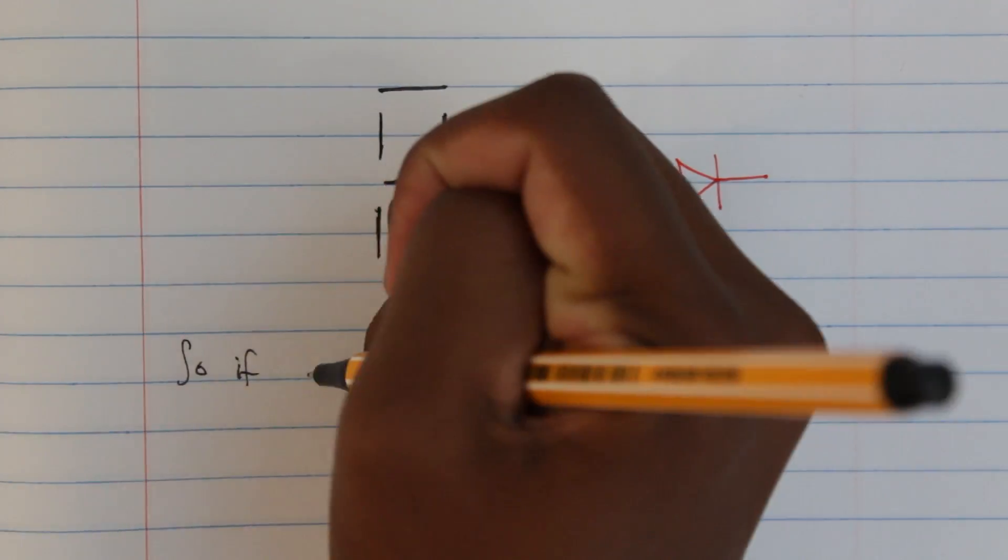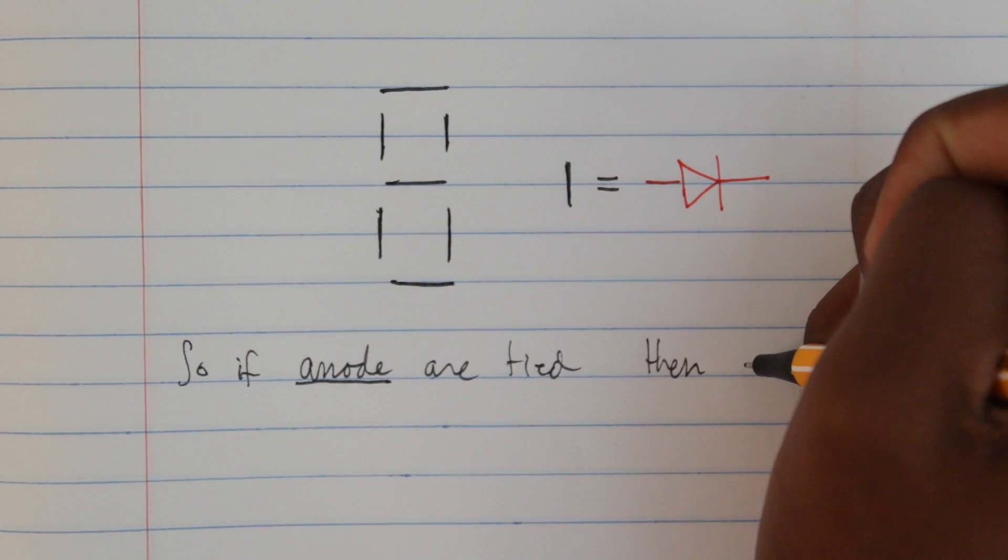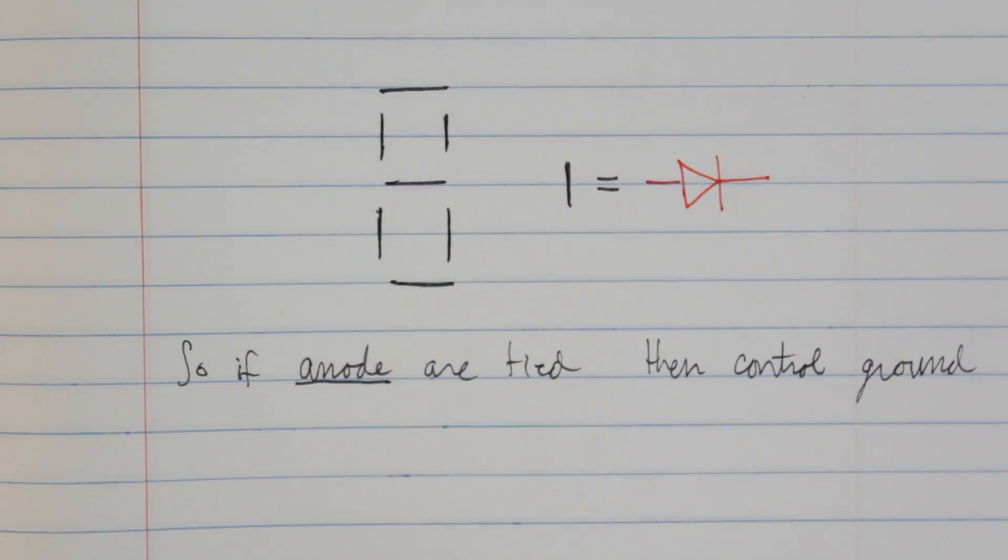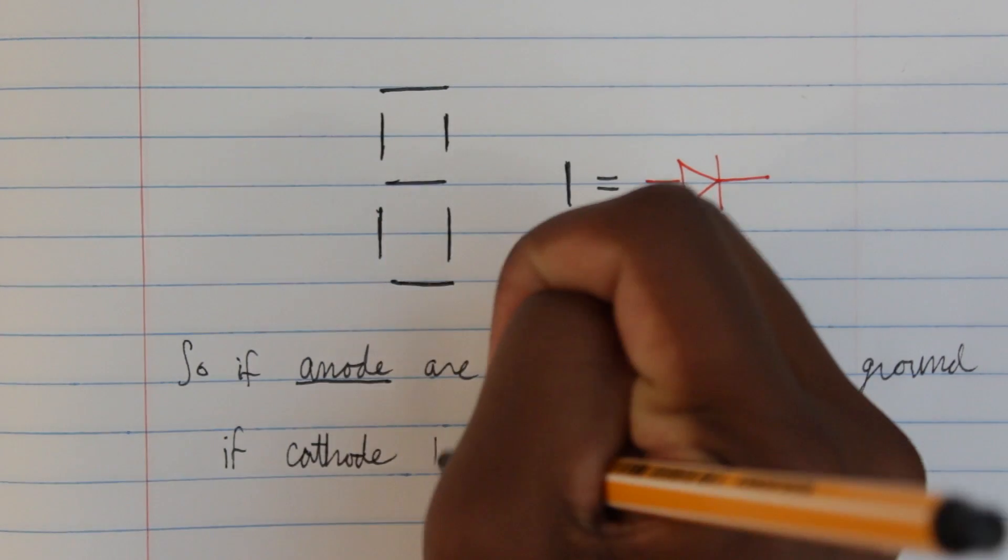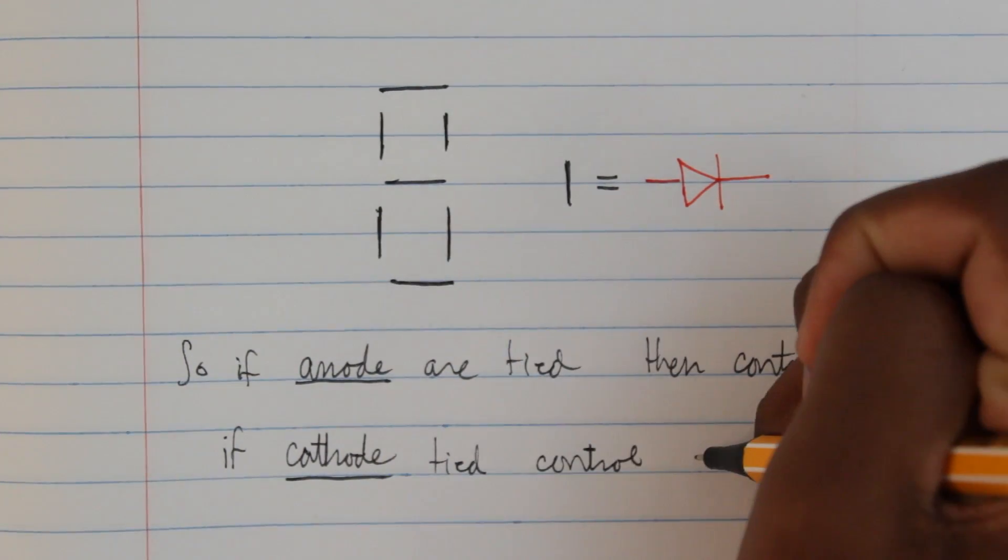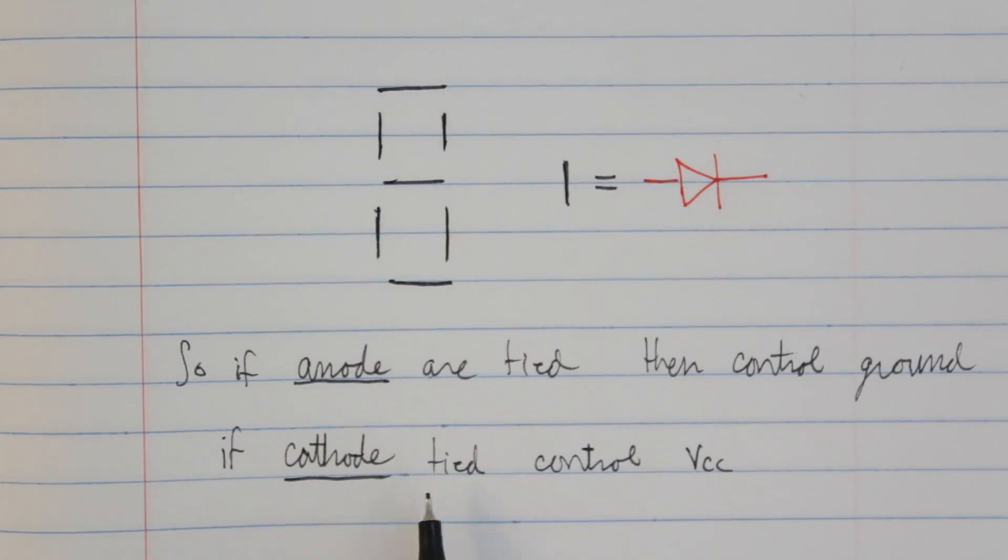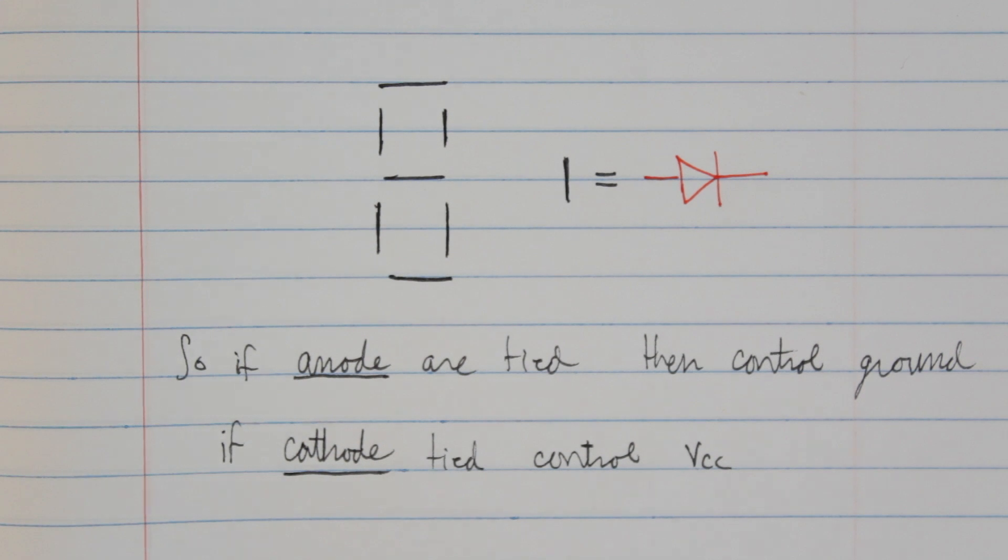To control these LEDs, we can tie all their anode pins together, called a common anode display, and control which of them connects to ground, or we can tie all their cathode pins together, called a common cathode display, and control which of them connects to power. To know which LED we are controlling, we need to name them.